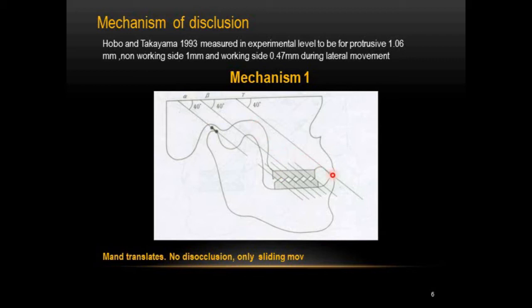In mechanism one, the incisal path, condylar path, and cusp angle are all parallel to each other. In this situation, the mandible translates without any disclusion — there is only sliding movement. This is a case of balanced occlusion: no disclusion, and contact is maintained everywhere.